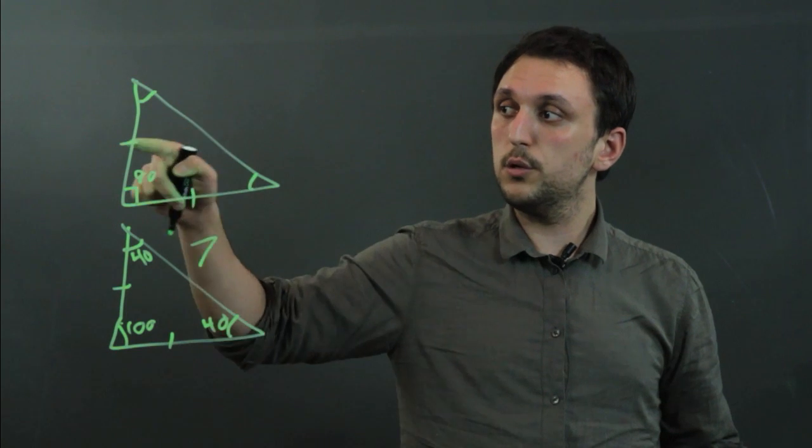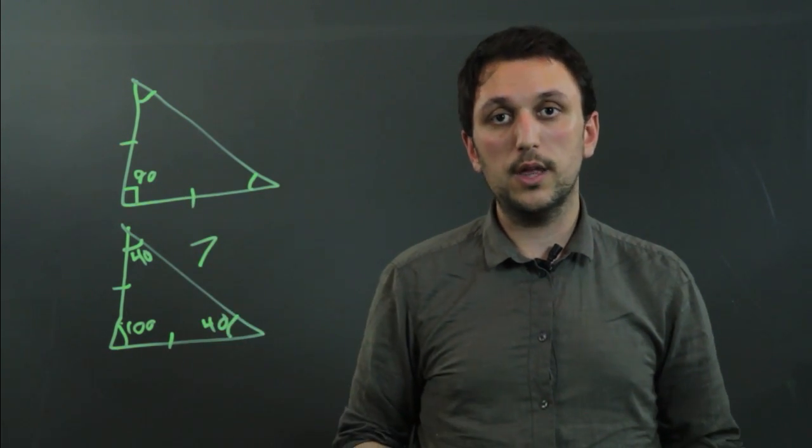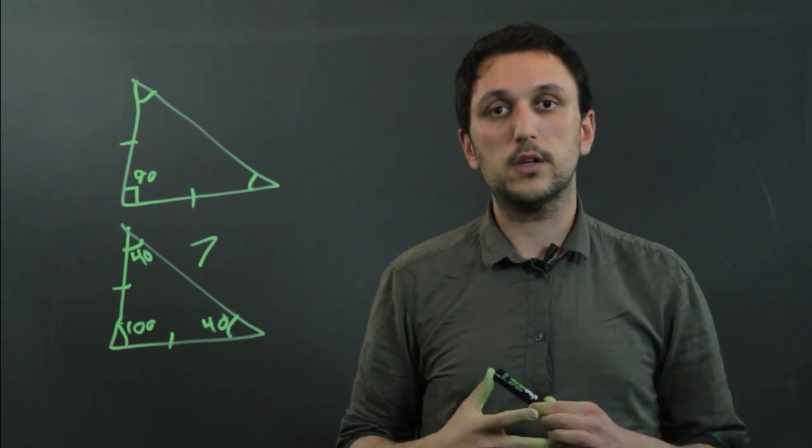So as long as you know that two sides are equal or two angles are equal, then you know that the triangle is isosceles. Thanks a lot.